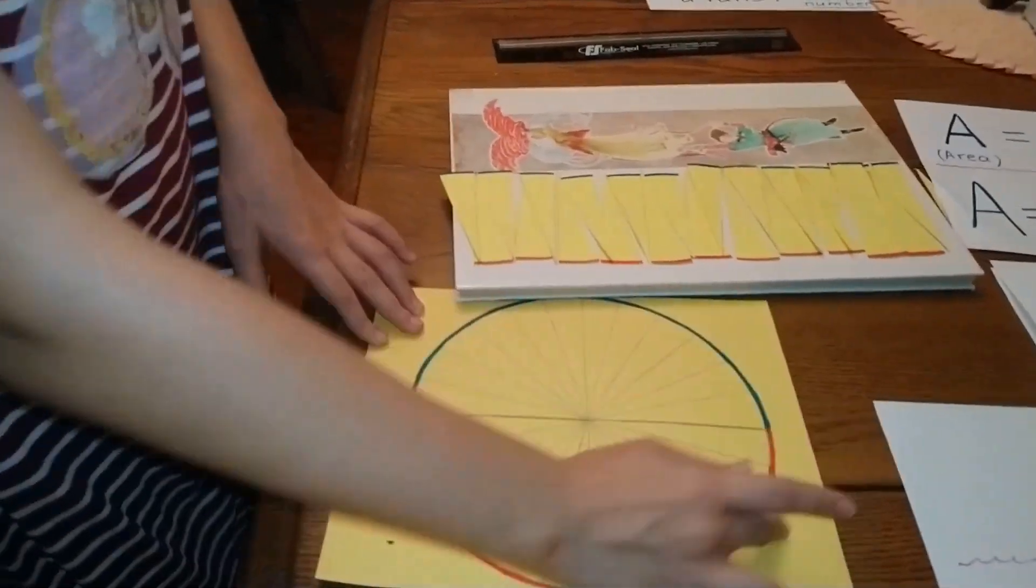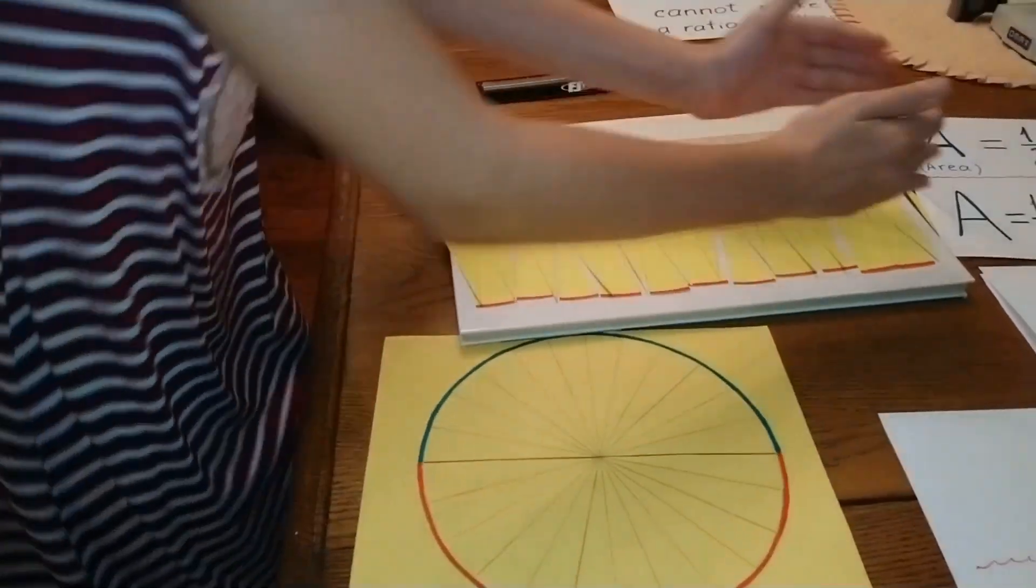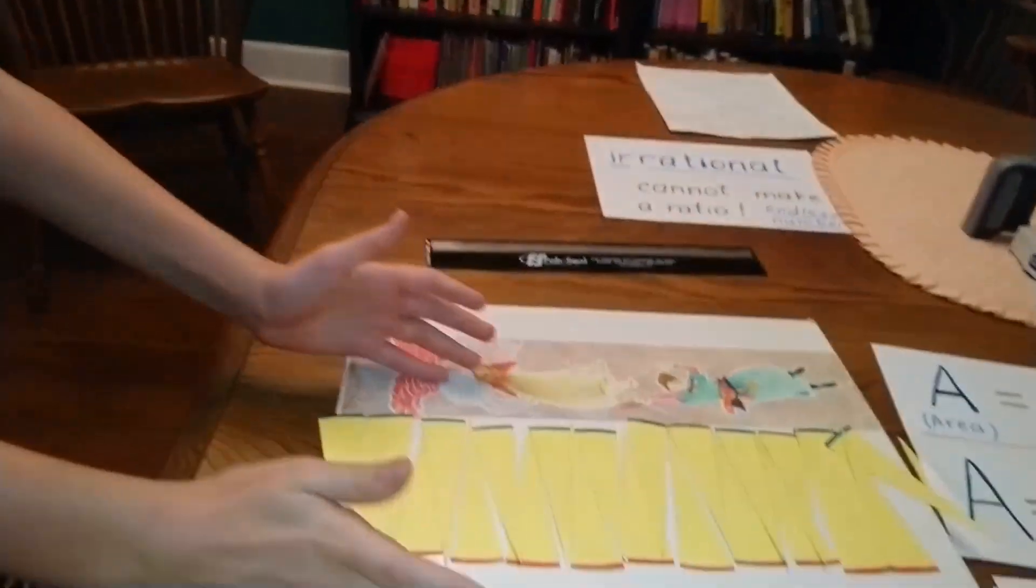I made this circle and divided it into twenty-four pieces and shaped it to look like a rectangle.